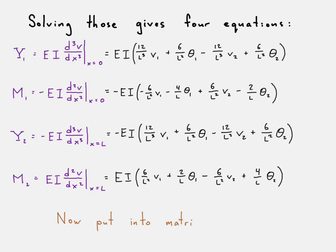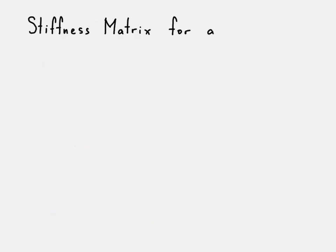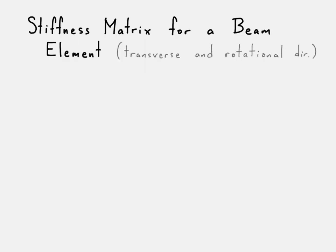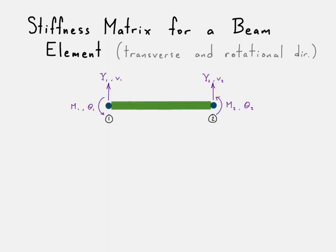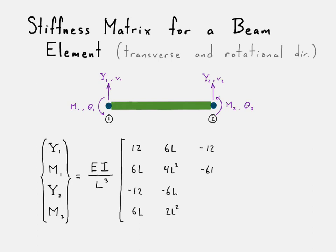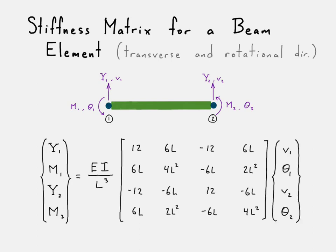Here's our stiffness matrix for the beam element, only including the transverse and rotational degrees of freedom — we're not worrying about the axial stiffness, which is the same as the truss element. Drawing out our element, here is our force vector, and here is our stiffness matrix. You can see that these are all the same terms from the previous slide, just put into matrix form. There's our displacement vector for the beam element.